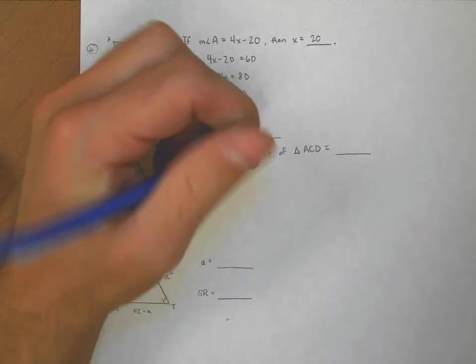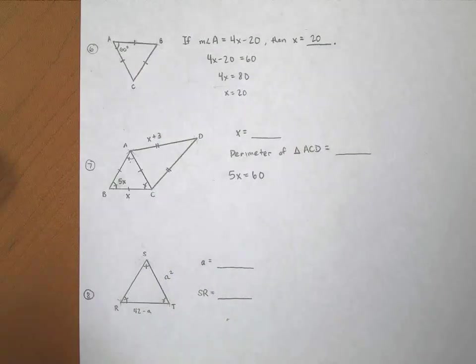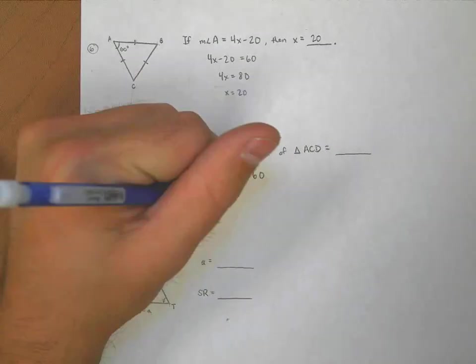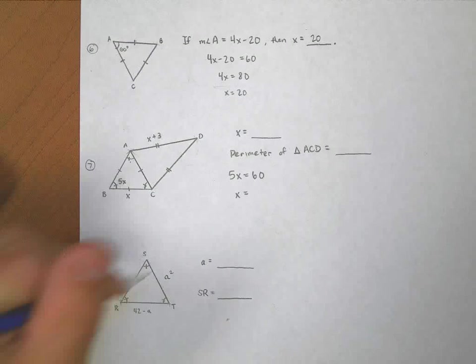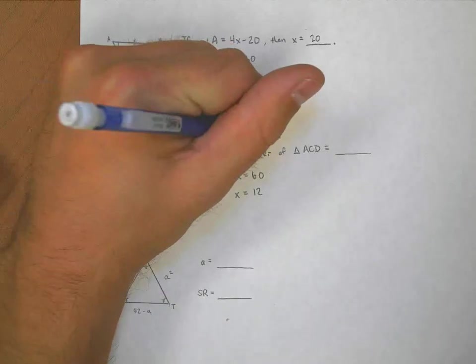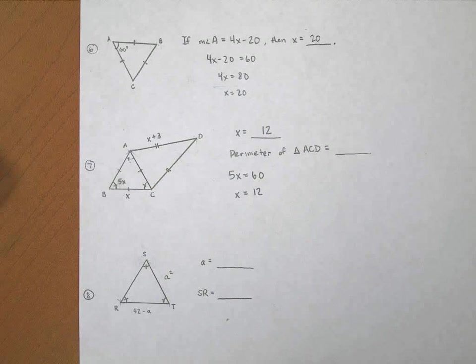This 5x must be a 60 degree angle. 5x must be equal to 60. So what's x? Well, if I divide out the 5, x is equal to 12. Halfway home.